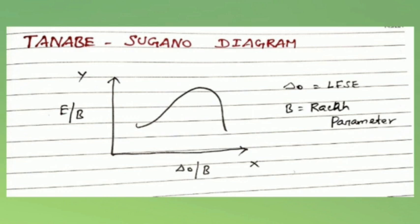It is similar to Orgel diagram, that is a correlation diagram, but more useful for extracting quantitative information. This diagram is obtained by plotting E/B on the y-axis versus Δ₀/B on the x-axis.